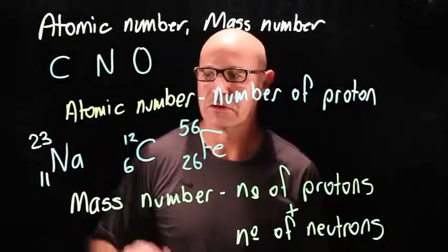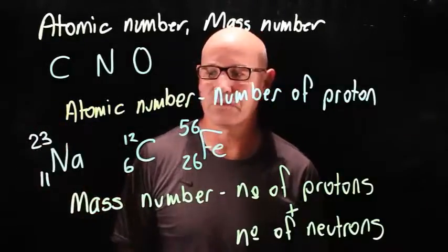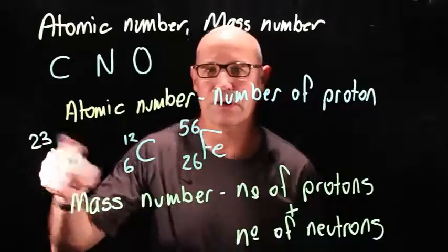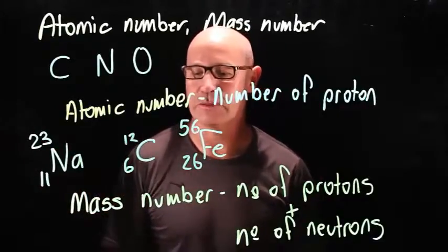23 is the mass number for sodium. 11 protons and 12 neutrons gives you 23 as the mass number.